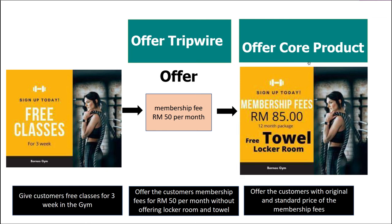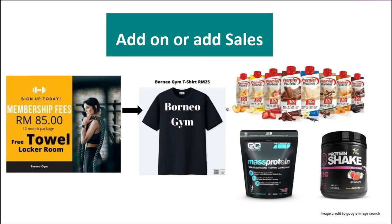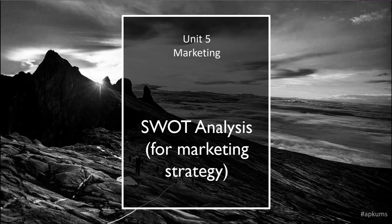The add-on stage is where, for example, the gym sells their own t-shirt — like a branded gym shirt for 25 ringgit — or other additional products. We call this the add-on. It is essentially selling additional products as a side income to multiply profit.